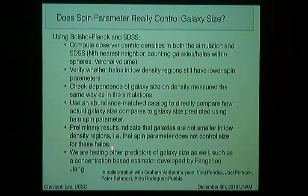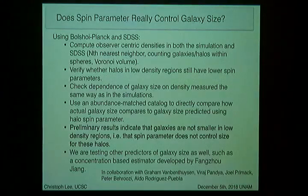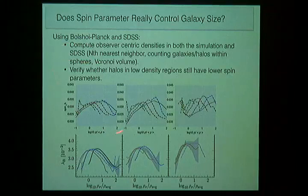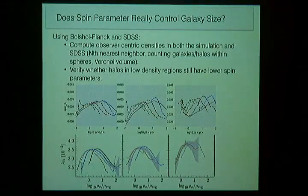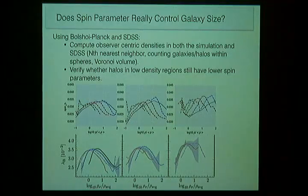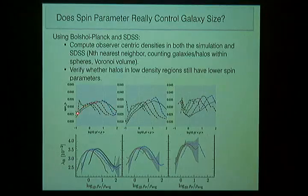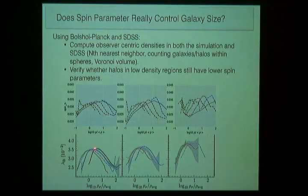There are other predictors we're checking, such as a concentration-based estimator suggested by Fengzhu Jiang. Here is a recently produced plot by Graham showing observer-centric densities: one method computes density by counting dark matter particles, and others count galaxies in different aperture sizes — more similar to what observers do — as well as the nth nearest neighbor. We see similar trends; the axis scaling is a little different, but spin parameters are still decreasing in low density regions.